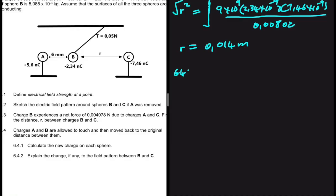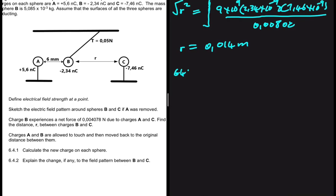Let's look at 6.4. So 6.4, charges A and B are allowed to touch and then moved back to the original distance between them. Calculate the new charge on each sphere. So when charges are allowed to touch and then separated, we say that Q new equals Q1 plus Q2 divided by 2. But then in this formula, we actually have to account for whether this sphere is positively charged or negatively charged.